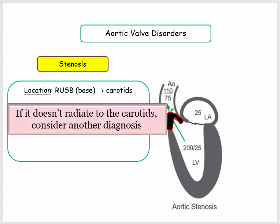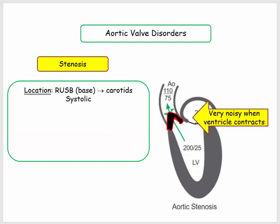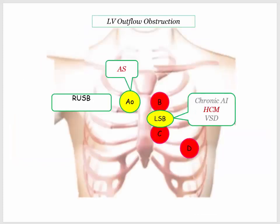Failure to radiate implies the degree of stenosis is not severe, or you have the wrong murmur. It is a systolic murmur, which is intuitive as blood flows past the aortic valve during LV contraction. When a murmur correlates with LV contraction, it is typically pretty loud, as also highlighted in the discussion of mitral regurgitation.